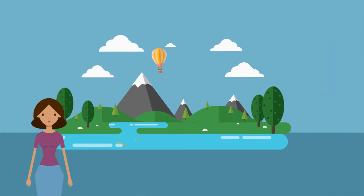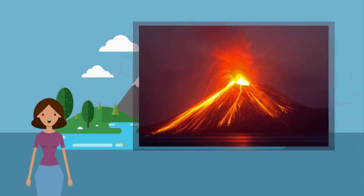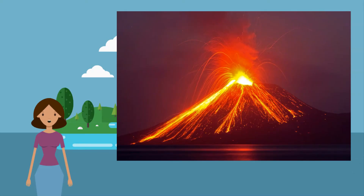Now let's talk about volcanoes. Volcanoes occur where there is a weakness in the Earth's crust, allowing magma to move to the surface where it forms lava. An active volcano is one that has erupted in living memory. A dormant volcano is one that last erupted in historical times — it can never be assumed that a volcano is extinct. Mount Pinatubo in the Philippines erupted violently in 1991 having been dormant for 600 years.